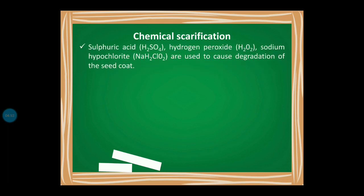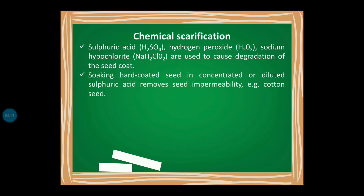In chemical scarification, we use certain chemicals to break or scarify the seed coat. Sulfuric acid is one of the most important chemicals, along with hydrogen peroxide and sodium hypochlorite. These chemicals are used to cause degradation of the seed coat. Soaking hard-coated seeds in concentrated or dilute sulfuric acid removes seed impermeability. For example, cotton seeds are soaked in a sulfuric acid solution.